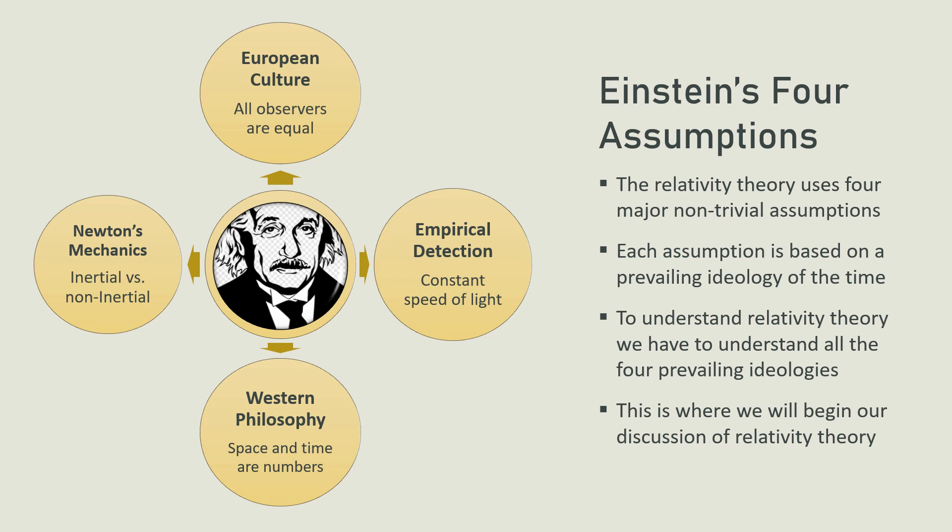The third assumption is that space and time have no meaning other than the instruments by which we measure them, because all words have to be understood in terms of measurable properties rather than as pure concepts. The fourth assumption is that all observers are equivalent, such that we can never call one observer's measurement true while calling another's false. Each of these four assumptions are false, as we will discuss over the course of this video and the next.